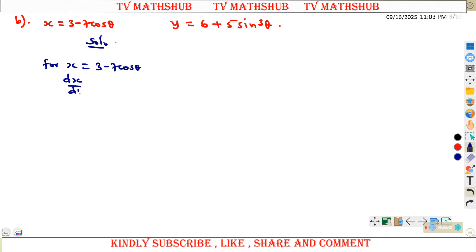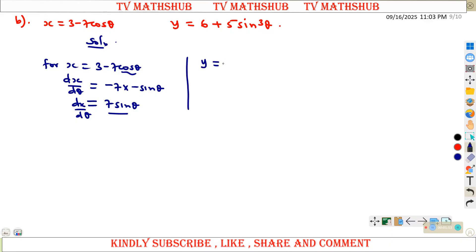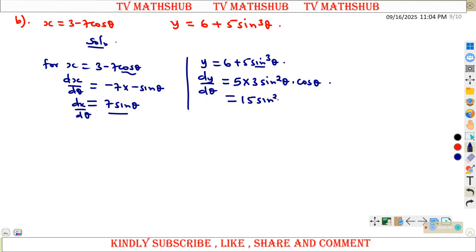Differentiating x with respect to theta: differentiating cos theta gives negative sine theta, so dx/d-theta equals 7 sine theta. For y equal to 6 plus 5 sine cubed of theta, differentiating with respect to theta: differentiate 6 to get 0, then apply the chain rule to 5 sine³ theta — drop the power to get 5 times 3 sine² theta times cos theta, giving dy/d-theta equal to 15 sine² theta cos theta.